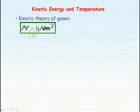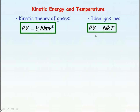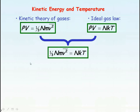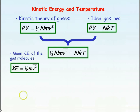Here we have the equation of the kinetic theory of gases. If we also use the equation for the ideal gas law — pressure times volume equals N, the number of gas molecules, times k, Boltzmann's constant, times T, the absolute temperature of the gas in Kelvin — because both expressions equal PV, we can say they're equal to each other. We know the equation for kinetic energy is one half Nm V squared, so the mean kinetic energy of the gas molecules equals one half times m, the mass of each gas molecule, times the mean square velocity.